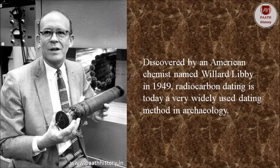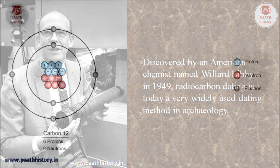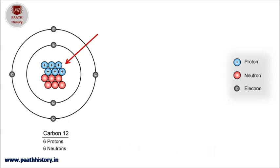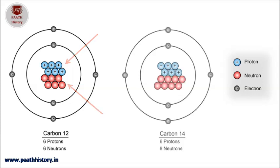The atmosphere contains a fixed ratio of carbon-12 or C-12 — ordinary carbon with six protons and six neutrons — and carbon-14 or C-14, a radioactive isotope of carbon with six protons and eight neutrons.